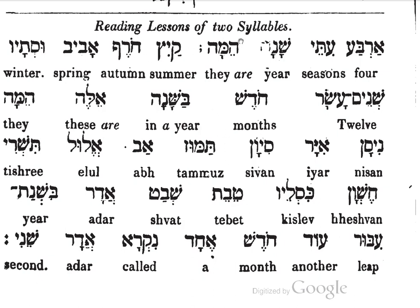A reading lesson with two syllables and translations as well. Arbang ngite shana — four seasons year. Arbang ngite shana hema — they are. The word 'are' is missing here, so: hema. Arbang ngite shana hema.